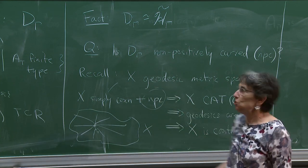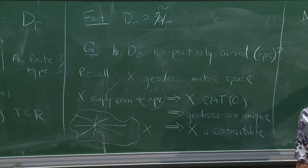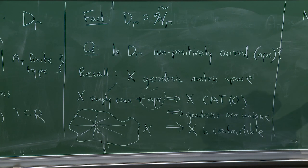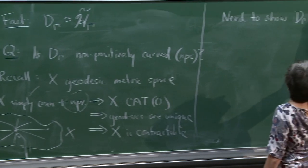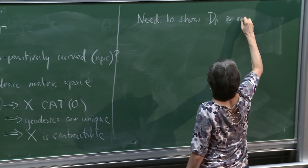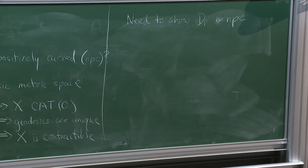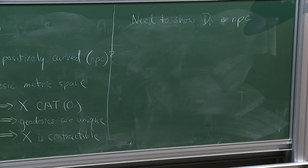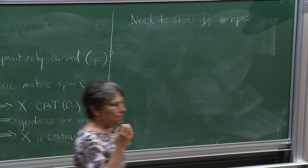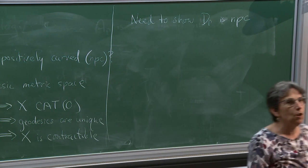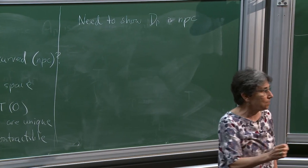So we're reduced to showing — we want to know — that D(γ) is non-positively curved. How do we do that? Now we're really working in a cube complex, and to show things non-positively curved we need to show that the links of vertices are flag complexes.